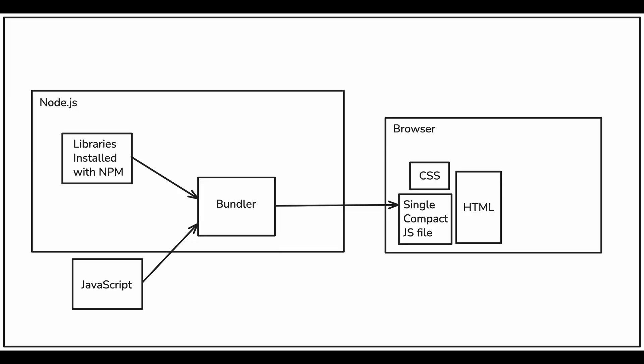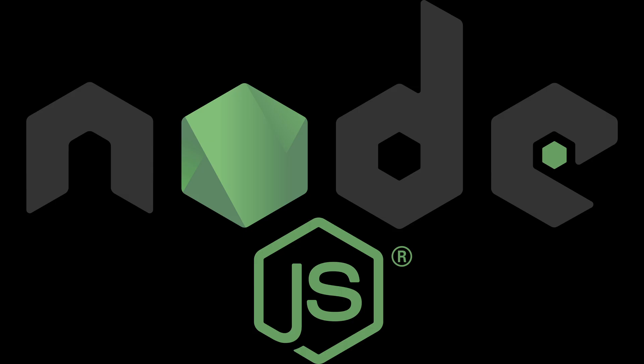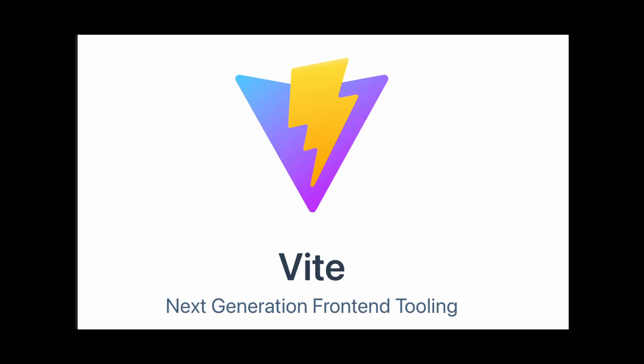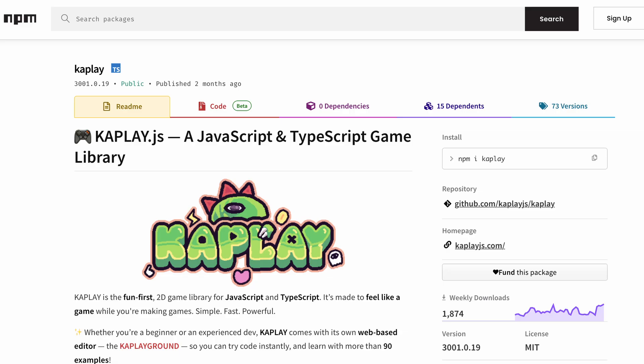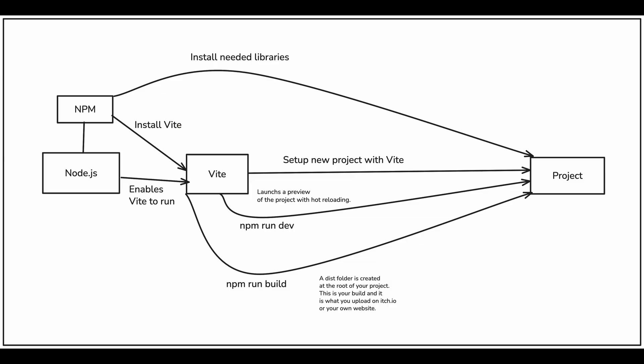Today, most JavaScript developers use a dev setup built around Node.js and npm, even if the intended code is to run in the browser and not in Node.js. For game dev, that implies installing Node, using a build tool like Vite, installing your game framework or libraries via npm, and compiling or transpiling your code to a version that can run on the web — in the browser more specifically. This is often called your build.